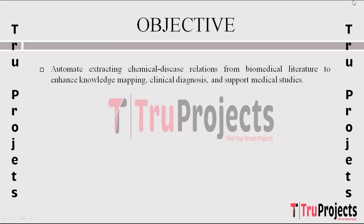The software objective of the project is to develop an automated system to extract chemical disease relations (CDR) from vast biomedical literature. By leveraging advanced techniques, the goal is to convert unstructured text into structured tuples, contributing to efficient medical knowledge mapping, clinical diagnosis, and supporting various medical studies. The significance lies in streamlining information extraction and providing valuable insights for the healthcare domain.